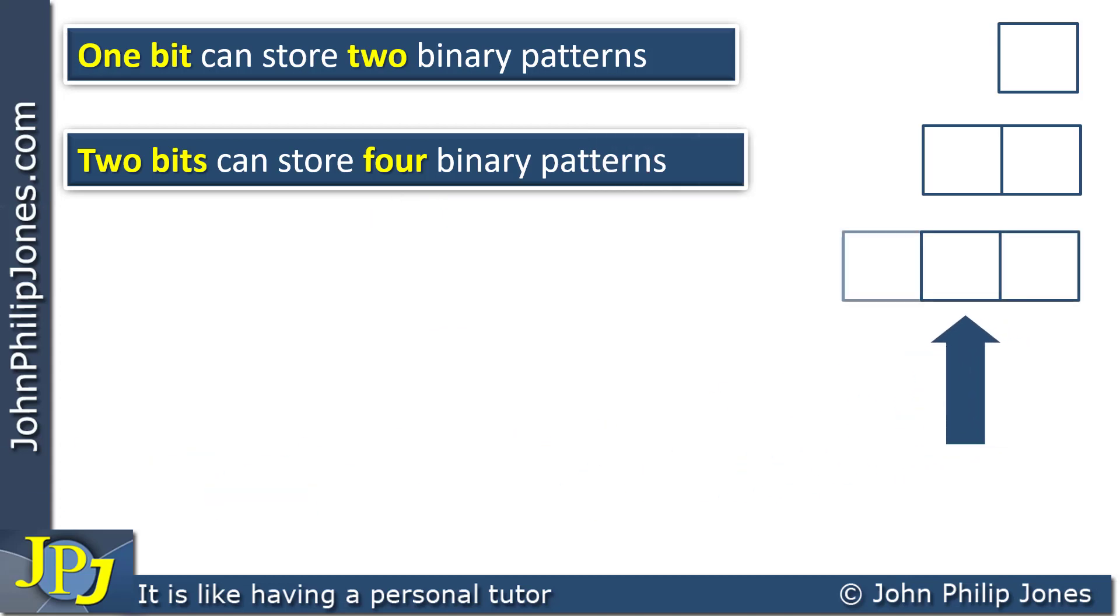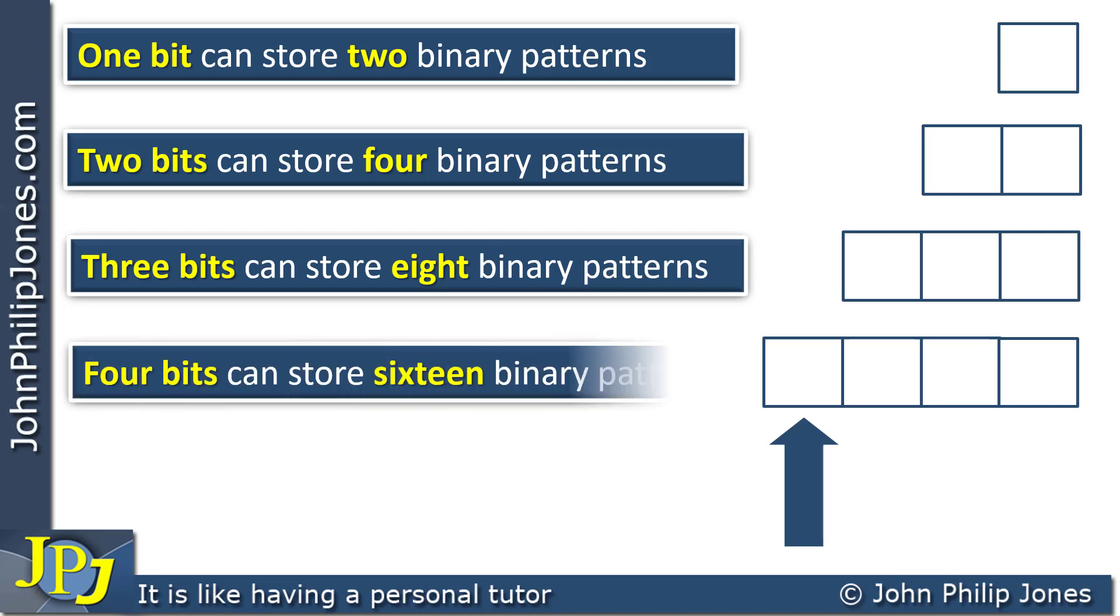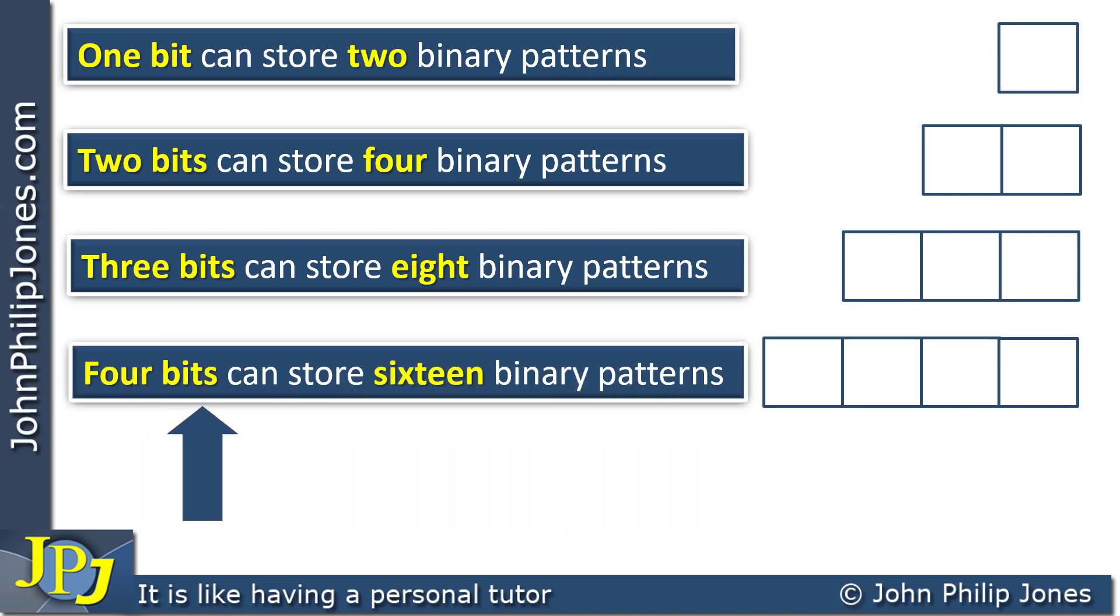If I take the two and I add another flip-flop, then this gives us eight binary patterns. When I take the number of flip-flops and add another one, we're going to double from the eight to the 16. So we can say that four bits can store 16 binary patterns from four zeros all the way up to four ones with every combination in between.